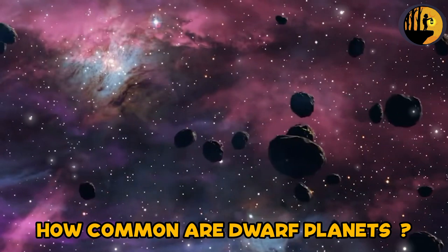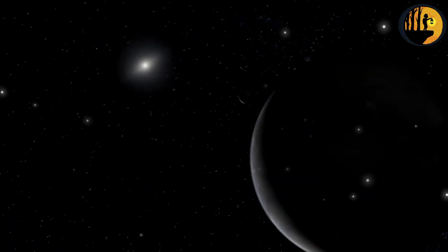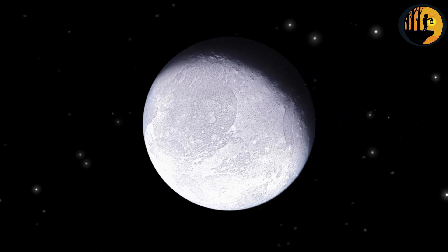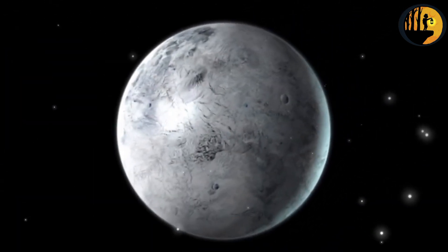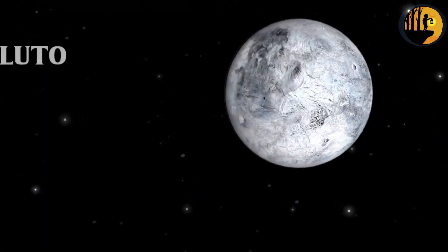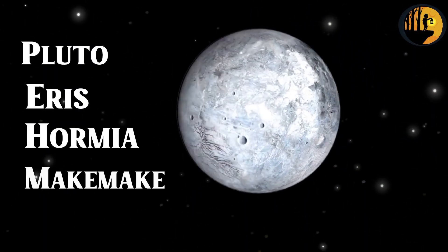How common are dwarf planets? Dwarf planets are relatively common in our solar system, although they are less numerous than the traditional planets. As of the current knowledge and understanding, there are five officially recognized dwarf planets within our solar system: Pluto, Eris, Haumea, Makemake, and Ceres.